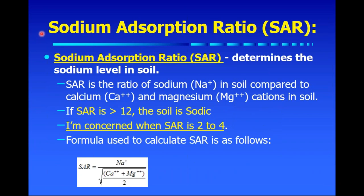For sodic soils, one of the analyses we use is the sodium absorption ratio. We're interested in the amount of sodium in the soil compared to calcium and magnesium. There's a complex formula to calculate that ratio, and when the level is greater than 12, that soil is classified as sodic. But when I see SAR values in the range of even two to four, I'm already concerned because an SAR of four can start to affect soil structure. These lab analyses are very meaningful for interpretation and deciding what kind of problem you have and how it should be managed.